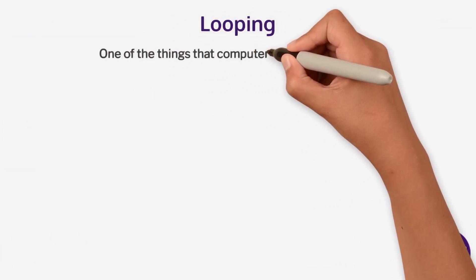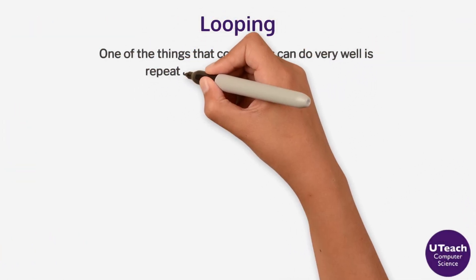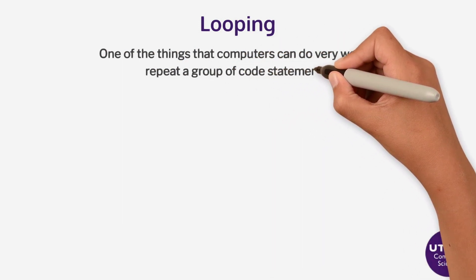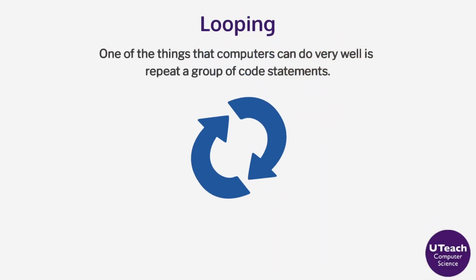One of the things that computers can do very well is repeat a group of code statements. Computer scientists often call this type of control flow a loop because the flow cycles back around to a point at which the program has already executed an instruction.